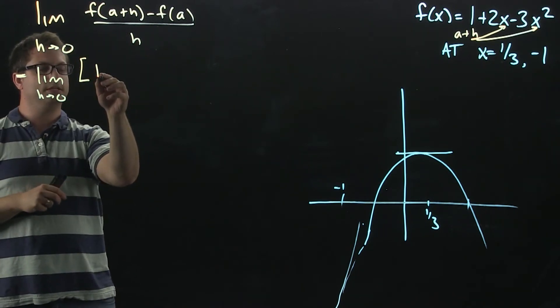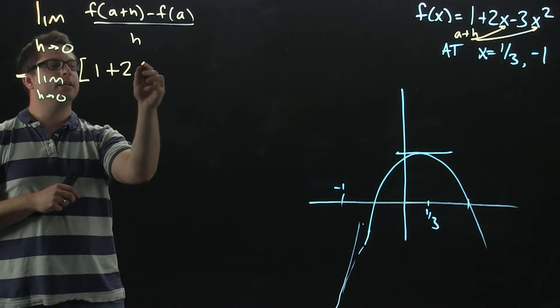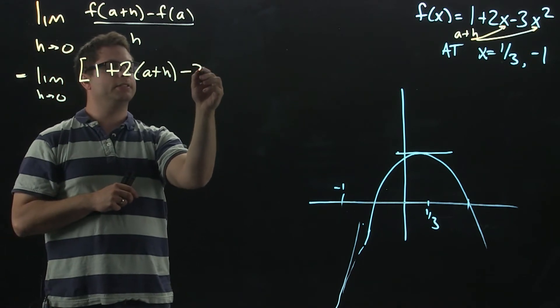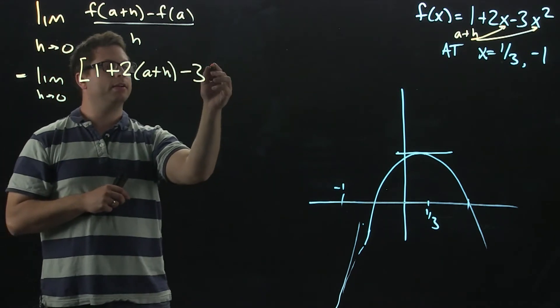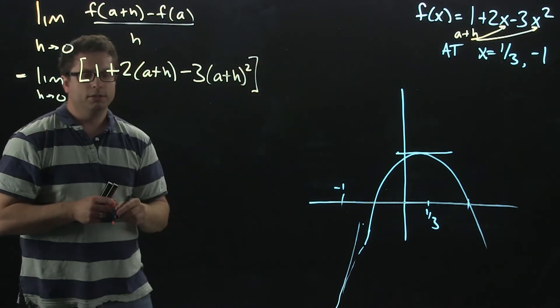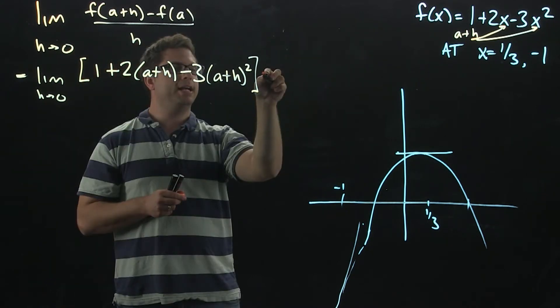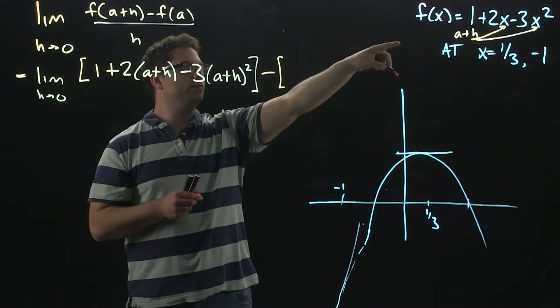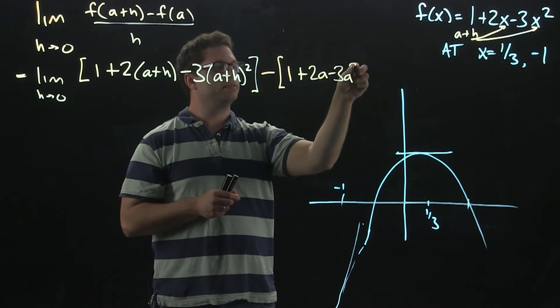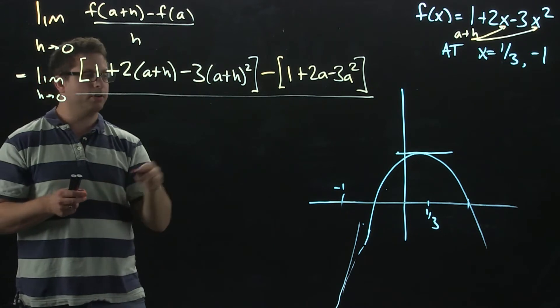We'll start with the 1. Then we got plus 2, and then instead of x, it's a plus h. Then minus 3, and instead of x squared, it's a plus h squared. So, that's your f(a plus h). Then you have minus f(a), which is just the function evaluated at a. All of this all over h.